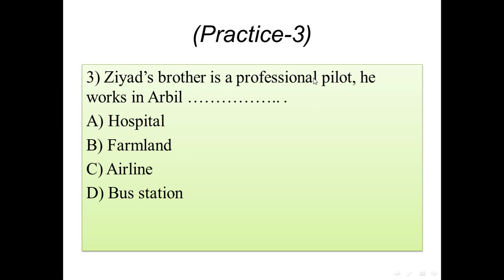Practice number three: Ziad's brother is a professional pilot. He works in Erbil blank. Options: A) hospital, B) farmland, C) airline, D) bus station. The right vocabulary is 'airline', because knowing that Ziad's brother is a pilot — someone who drives or operates a plane — we can say he works in Erbil airline, not in a hospital, farmland, or bus station.